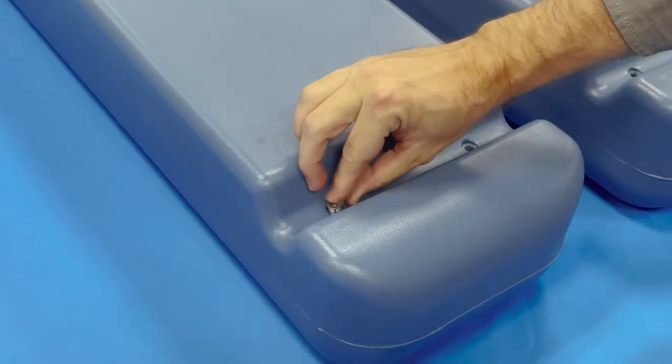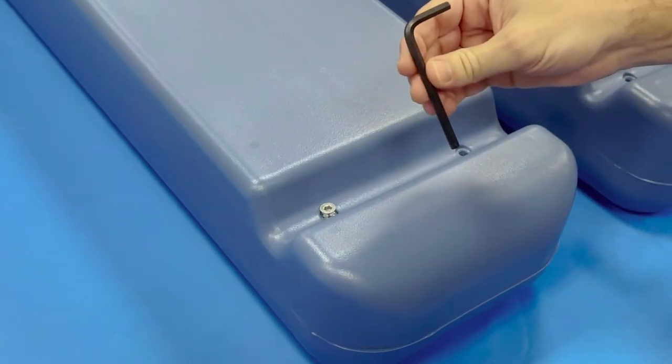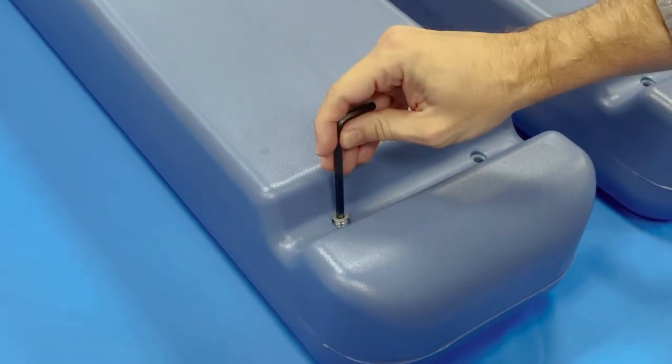Place the flange inserts into the floating pontoons. Use the allen wrench and tighten by turning in a clockwise direction.